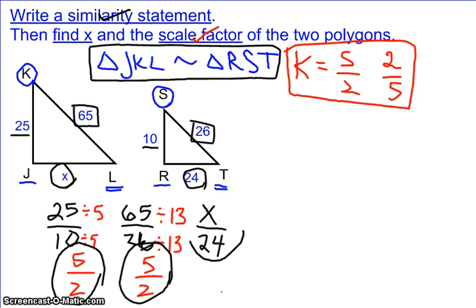That's how we got our scale factor. So I know my third side length pair should also change by 5 over 2. So I have to figure out what x is so it can simplify to 5 over 2.